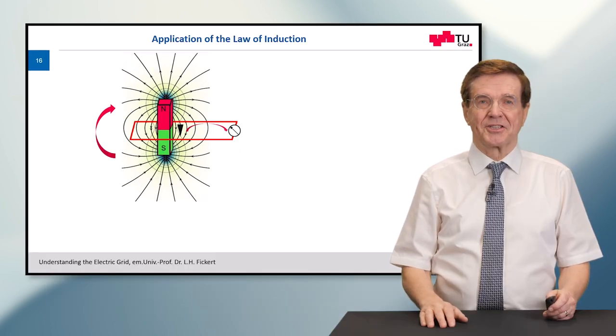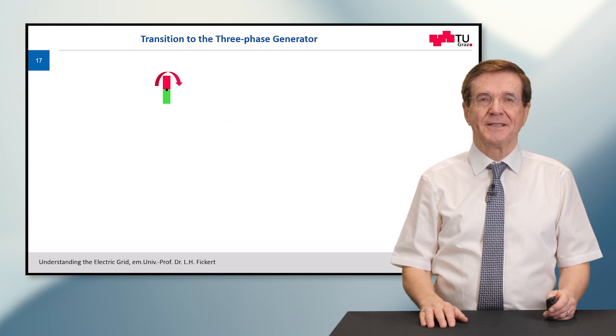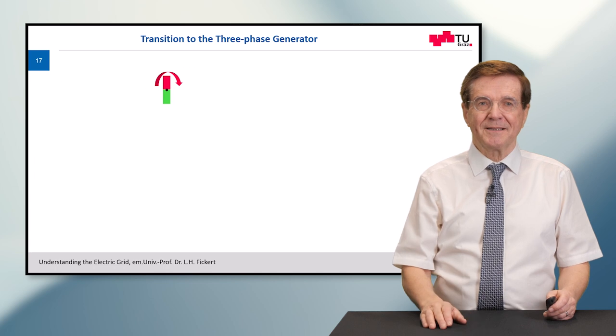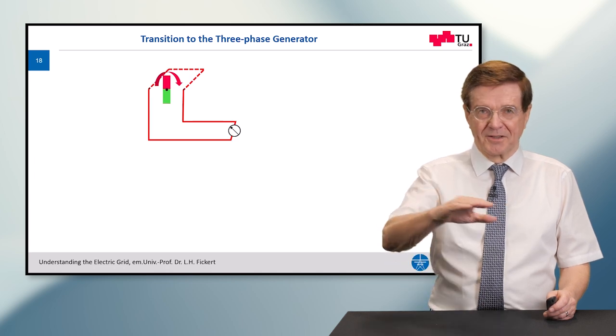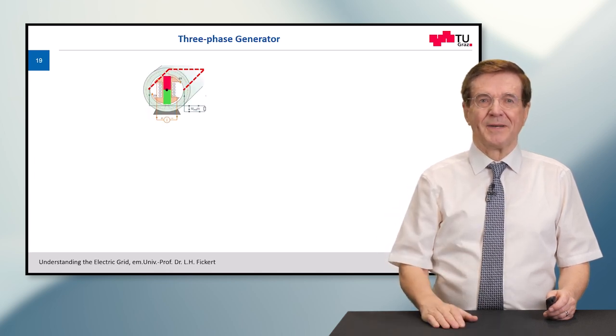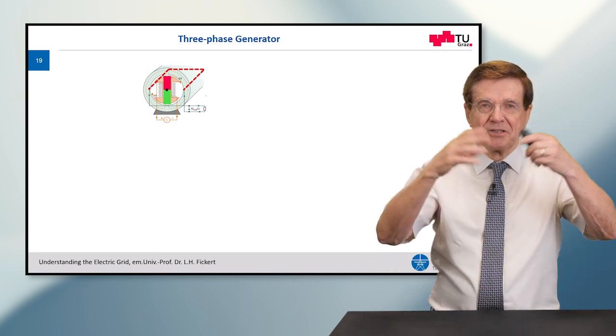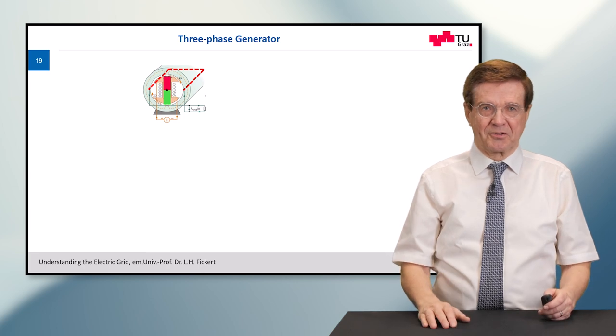Now, to make a transition to the three-phase generator, we need again these ingredients: the rotating magnet, the horizontal coil, and to make it more like engineering, we put around it a coil of iron in which the magnetic field makes very strong.